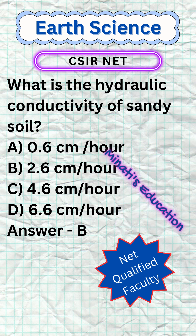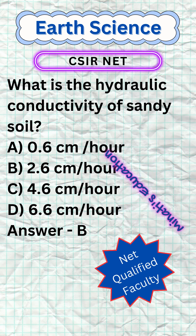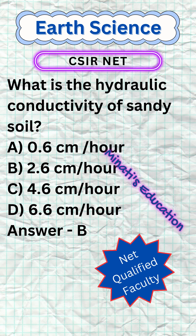Answer: b. The hydraulic conductivity of sandy soil can vary depending on several factors, but generally falls within a range of 2.6 x 10 to the power minus 4 cm per hour to 6.56 x 10 to the power minus 4 cm per hour, which is closer to answer choice b, 2.6 cm per hour.